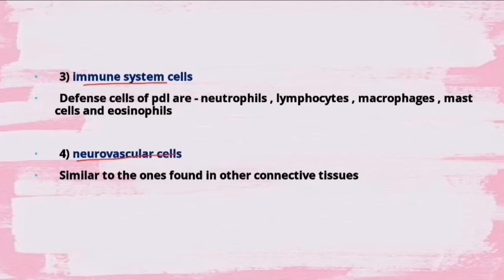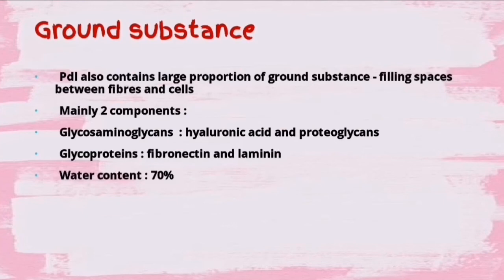The immune system cells are the defense cells of the periodontal ligament - neutrophils, lymphocytes, macrophages, mast cells, eosinophils, etc. The neurovascular cells are similar to those found in normal connective tissues.